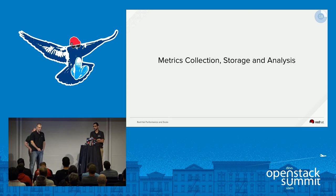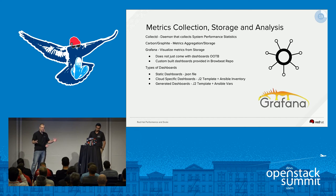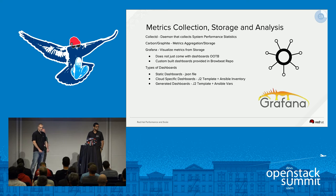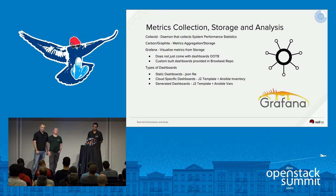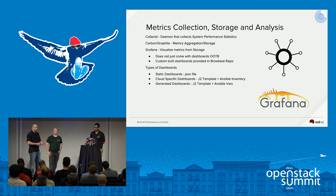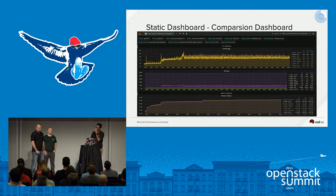I'll be talking about metrics collection and storage analysis. We use a Collectd, Carbon, Graphite, Grafana stack to collect, store, and visualize our metrics. Collectd is a lightweight daemon that pushes metrics out of our systems. Carbon receives it and writes it into Whisper database files. Grafana is the really pretty part that everybody likes to see. With BrowBeat, we ship a number of dashboards because configuring Grafana yourself has a lot to learn, especially when you're dealing with metrics for the first time. We include static dashboards, cloud-specific dashboards, and generic generated dashboards.